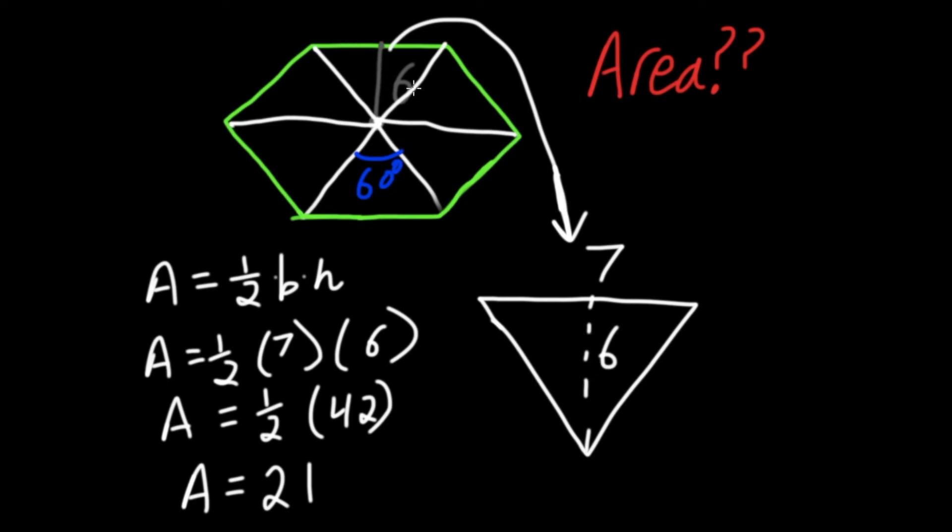So we have now found the area of this triangle here. But remember, we have six triangles total. So if we times our area of this triangle by our total number of triangles, which is 6, we will get the area of our entire hexagon. So 21 times 6 is 126. So our area of this hexagon is 126, whatever unit you're using, say centimeters squared.